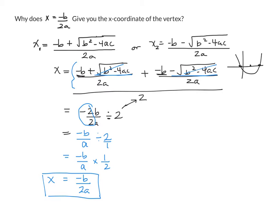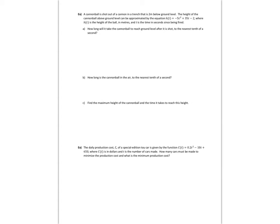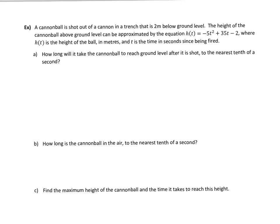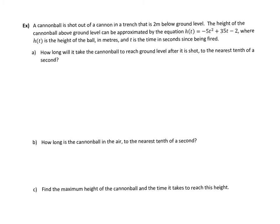Alright, let's do an example or two where we're solving some problems now. A cannonball is shot out of a cannon in a trench that is 2 meters below ground level. The height of the cannonball above the ground level can be approximated by this equation right here, where h is your height of your ball in meters and t is the time in seconds since being fired.